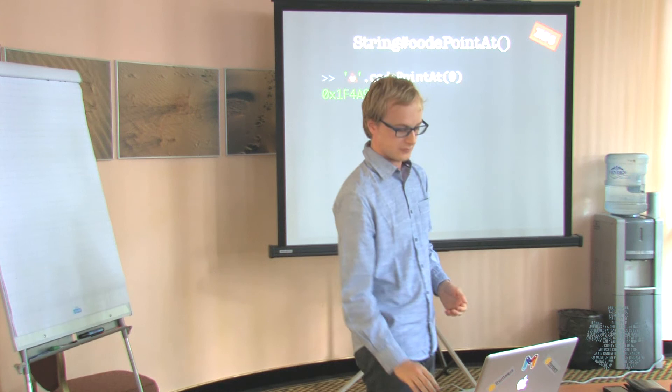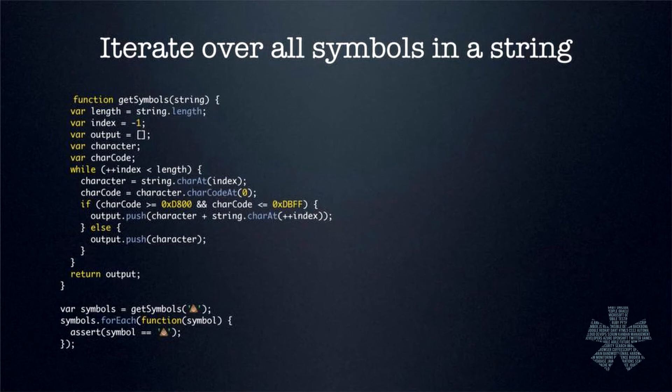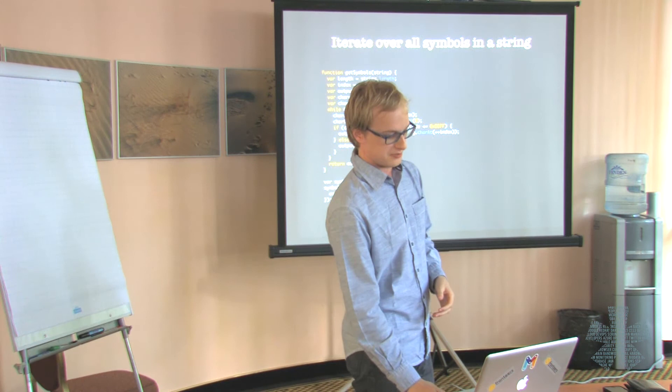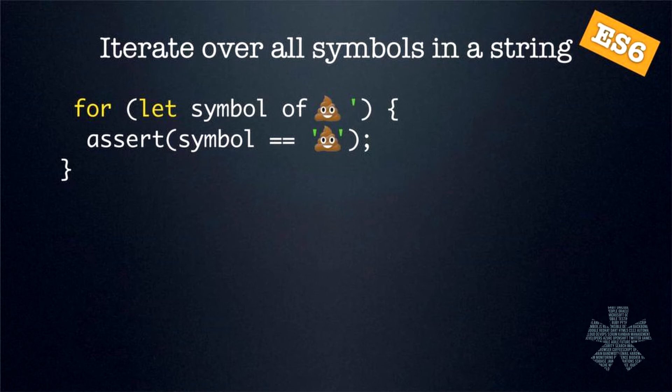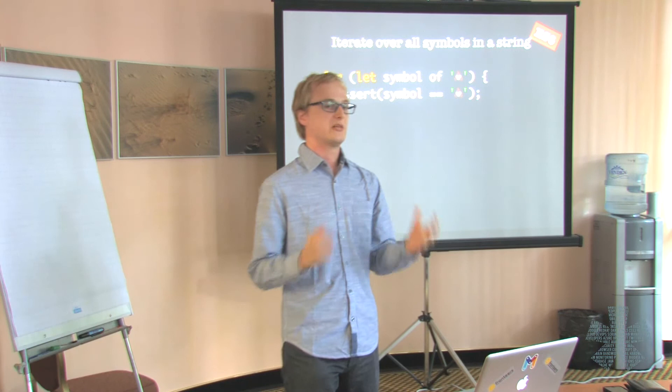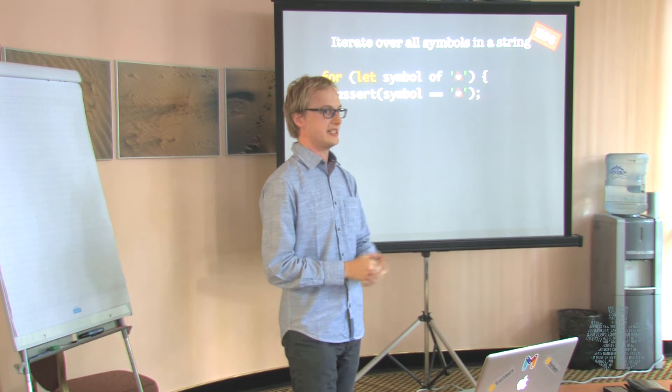Another fun thought exercise: how would you iterate over all the symbols in a string? In ECMAScript 5, you would have to write a lot of boilerplate code just to account for those surrogate pairs, because you don't want to deal with one half of the surrogate separately. ECMAScript 6 will greatly simplify this because you can just use for-of on the string, and the default iterator for strings will deal with whole symbols instead of surrogate halves. This code is much easier to read and much simpler.